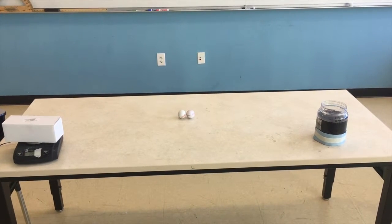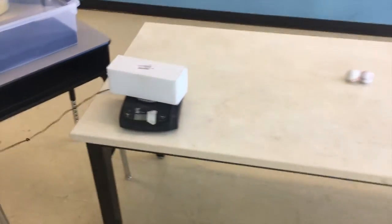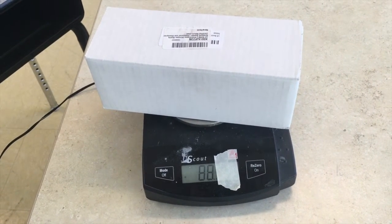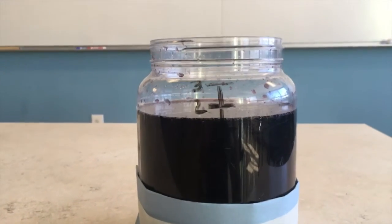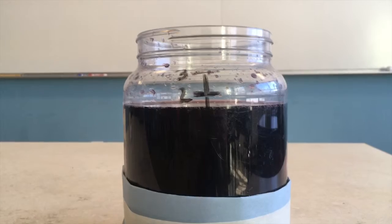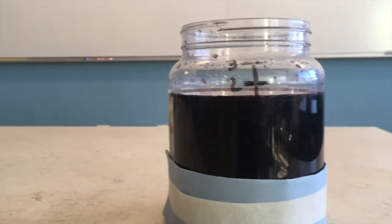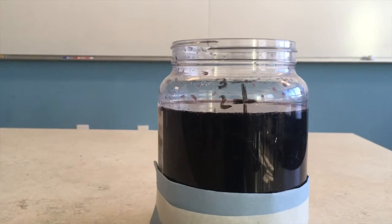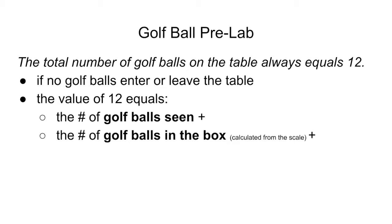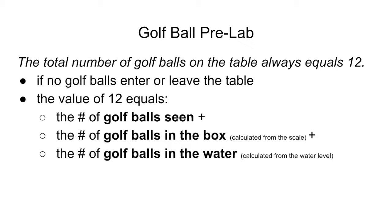The number of golf balls we can see on the table is just equal to 2. Let's go ahead and do some investigation. What do you notice about the scale? We know there are no golf balls hidden in there because that 88 grams is the original mass of the box. If we go down here, what do you notice about the water level? The water level has risen — it was at zero before, and now we're up between 1 and 2 on the water level. If we do a little calculation, we could figure out how much the water level rises every time a golf ball is added. So now we need to add this new term into our equation: the value of 12 equals the number of golf balls seen, plus the number of golf balls in the box calculated from the scale, plus the number of golf balls in the water calculated from the water level.